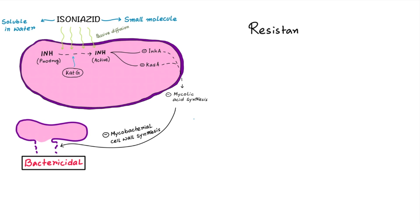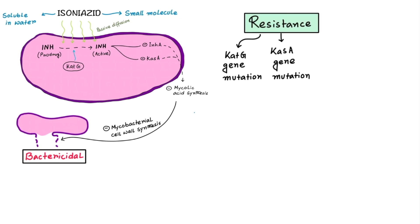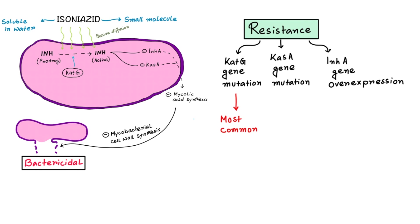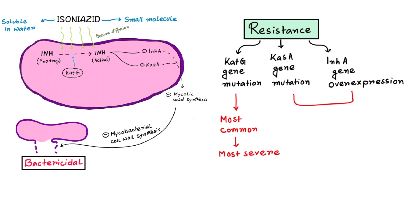Resistance can be seen due to mutation of the katG gene and kasA gene, or overexpression of the InhA gene. katG gene mutation is the most common mechanism and is responsible for the most severe form of resistance. It may also be associated with ethambutol resistance. InhA gene overexpression and KasA gene mutation lead to a low level of resistance.